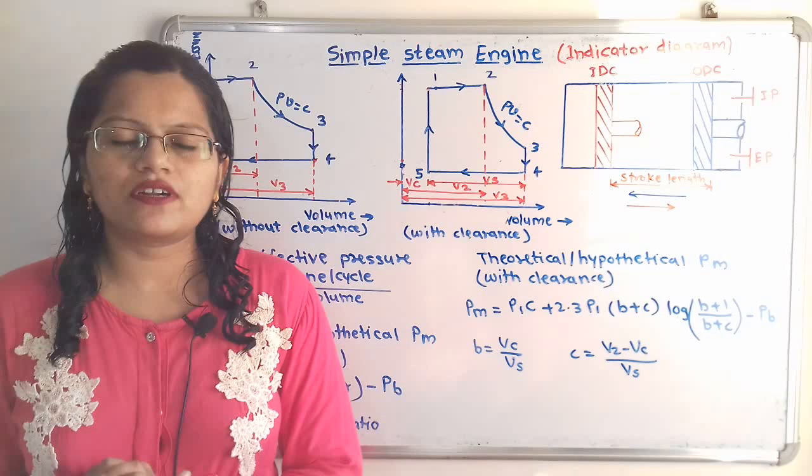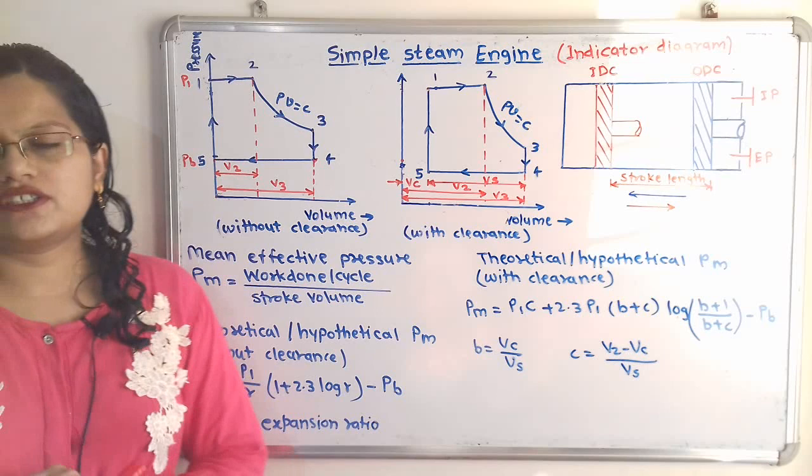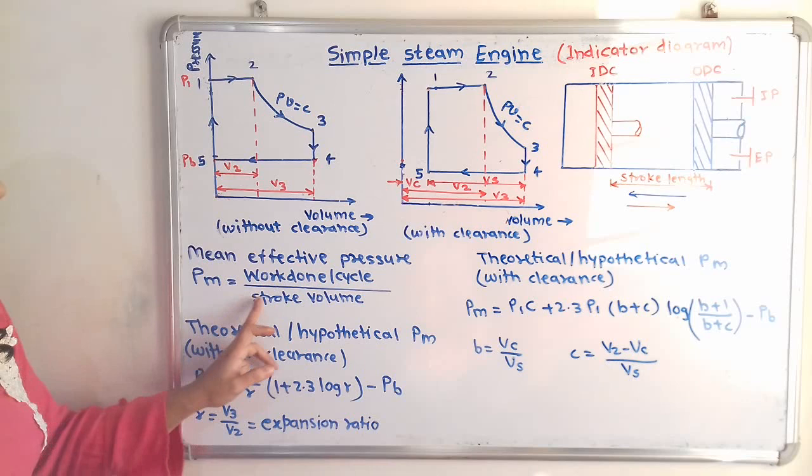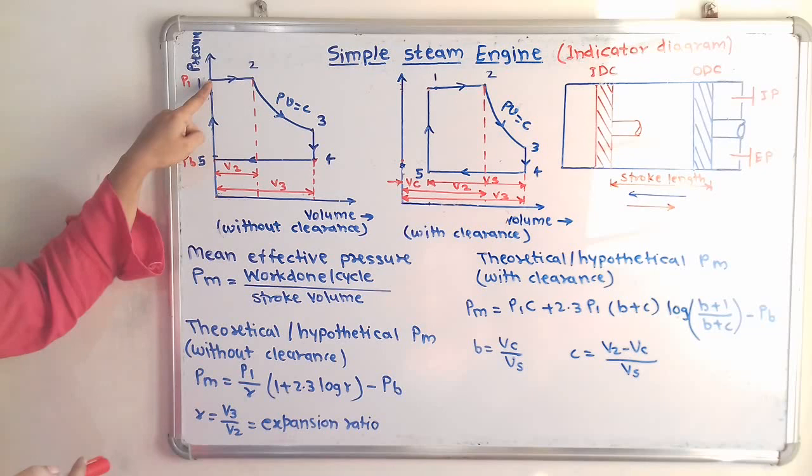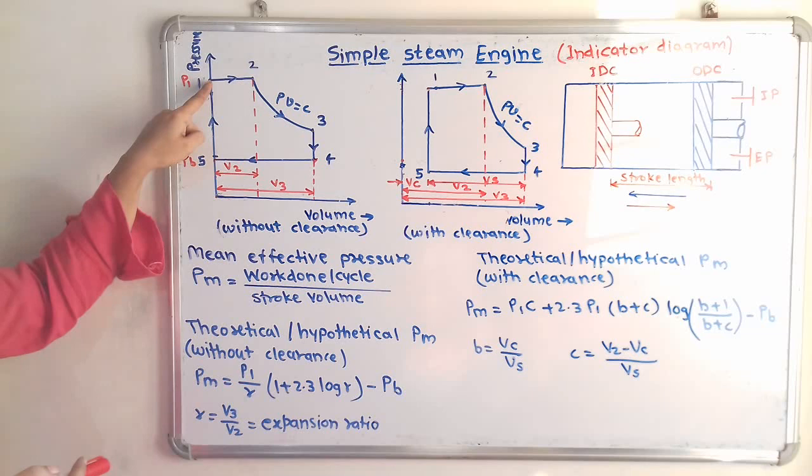Now for important formulas. Mean effective pressure Pm equals work done per cycle divided by stroke volume — which is the area under the curve 1-2-3-4-5-1 divided by stroke volume. Without clearance, the theoretical mean effective pressure formula is: Pm = (P1/R) × (1 + 2.3 log R) − Pb, where R is the expansion ratio V3/V2 and Pb is the back pressure.